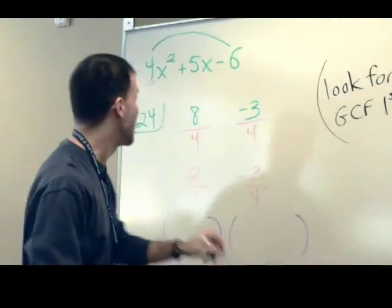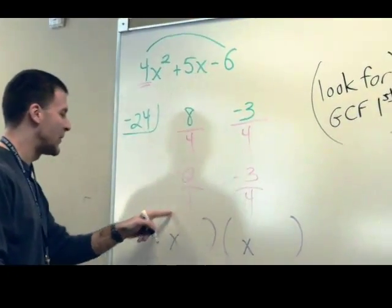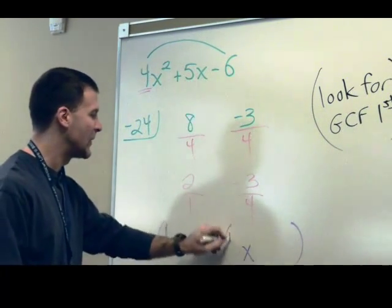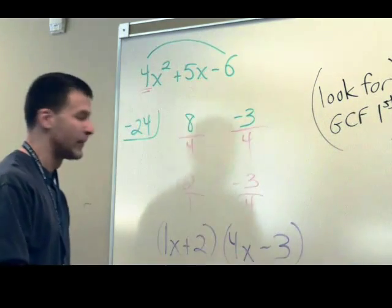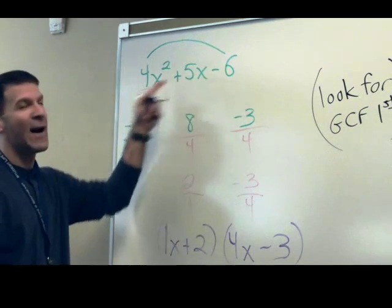From there, we'll make our parentheses sets. We already know there has to be x's in the first spots. Denominator goes in front, numerator goes after, denominator in front, numerator after. There's your factoring. If you have to just simply factor.